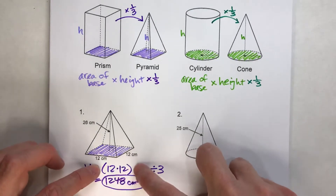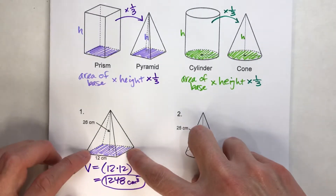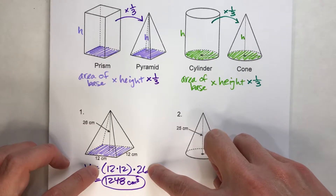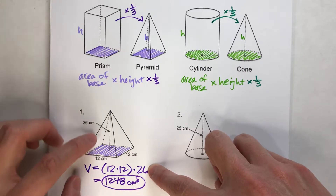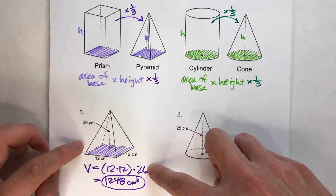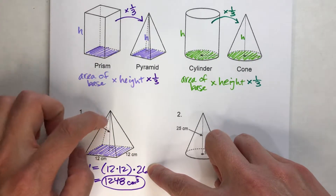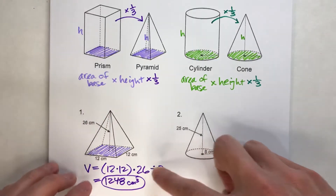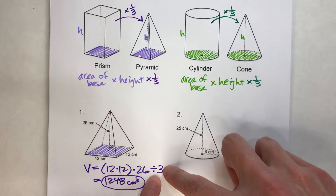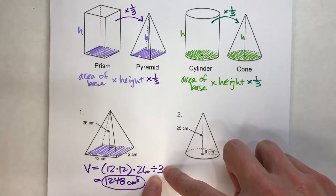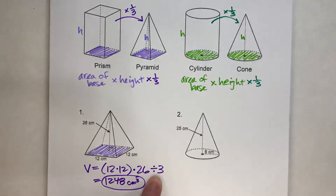12 times 12 (area of the base) times the height 26 would give you the volume of the prism with these dimensions. But because it's a pyramid, we have to do that one extra step — divide by three.